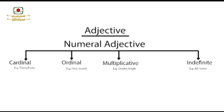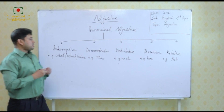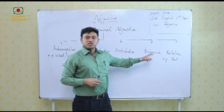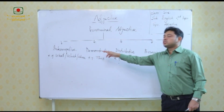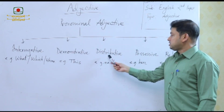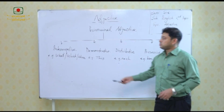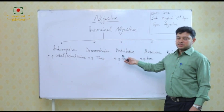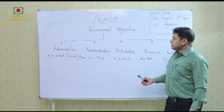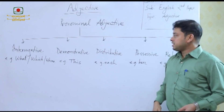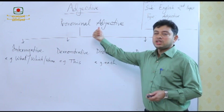Now we shall move on to pronominal adjective. The five types are: interrogative, demonstrative, distributive, possessive, and relative. These are all originally pronouns — interrogative pronoun, demonstrative pronoun, distributive pronoun, possessive pronoun, and relative pronoun. But when they qualify a noun, their names change: they become interrogative adjective, demonstrative adjective, distributive adjective, possessive adjective, and relative adjective — all of which are pronominal adjectives.